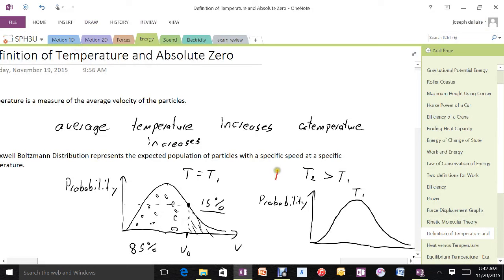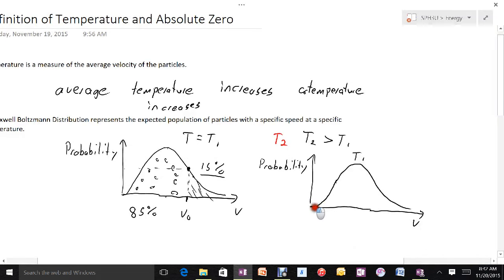What happens instead is it's kind of like it just stretches out. So if this is the old curve, we'll call that one T1. And then let's put T2 on in a different color. So let's make T2 the red ones. What that means then is that it sort of shifts a little bit more to the higher velocities.